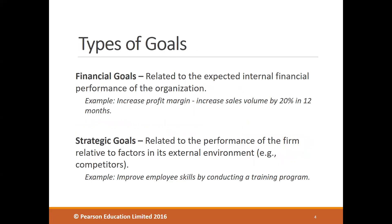Moving on to types of goals: we can classify a company's goals as either financial or strategic. Financial goals are related to the financial performance of the organization, while strategic goals are related to all other areas. For example, a financial goal would be to increase profit margin by 20% in the next 12 months, whereas a strategic goal would be to increase overall revenue or to improve employee skills by conducting a training program.